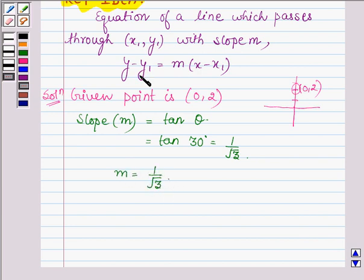And here the given points are 0, 2, so this implies x1 is equal to 0 and y1 is equal to 2.